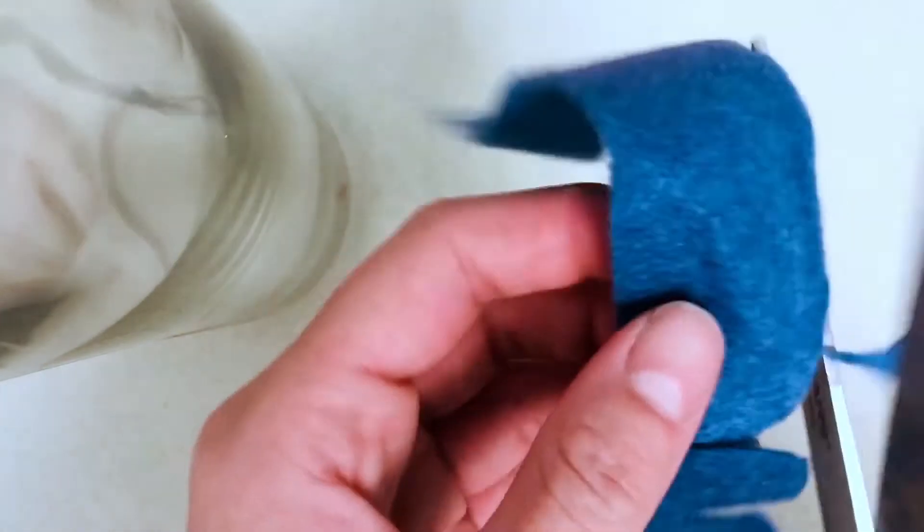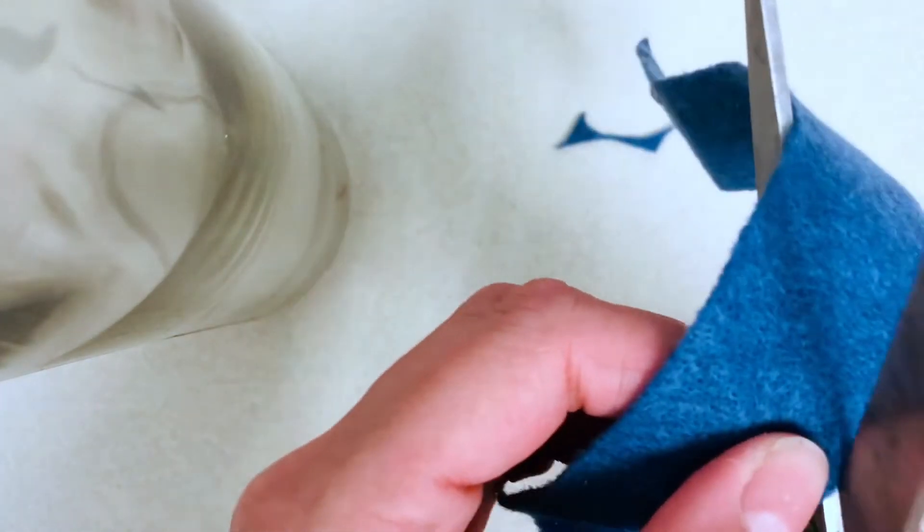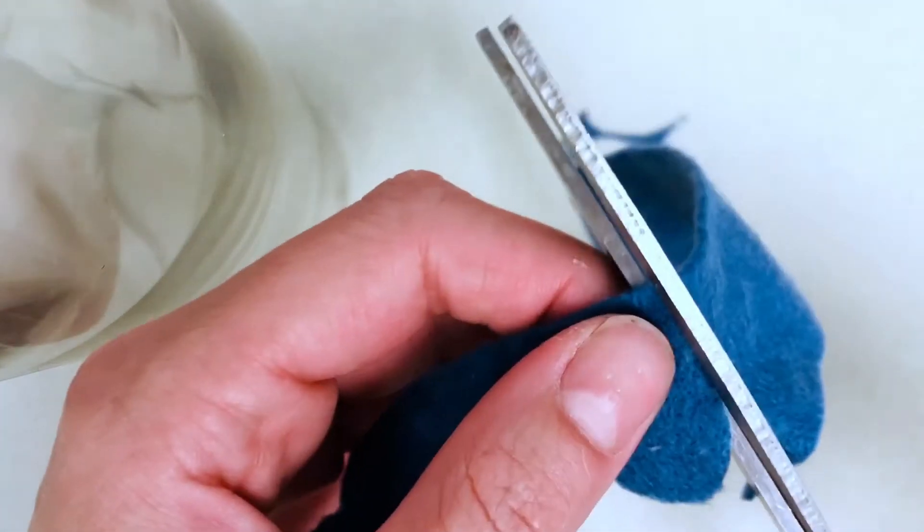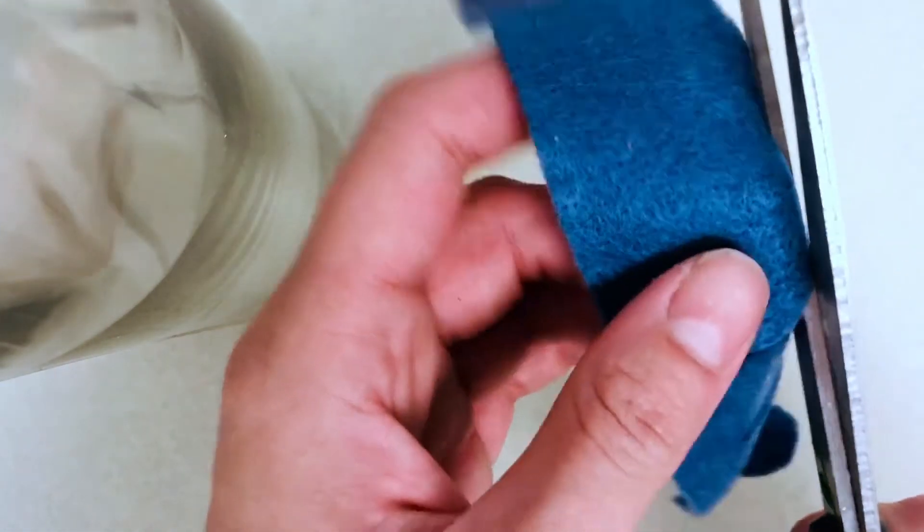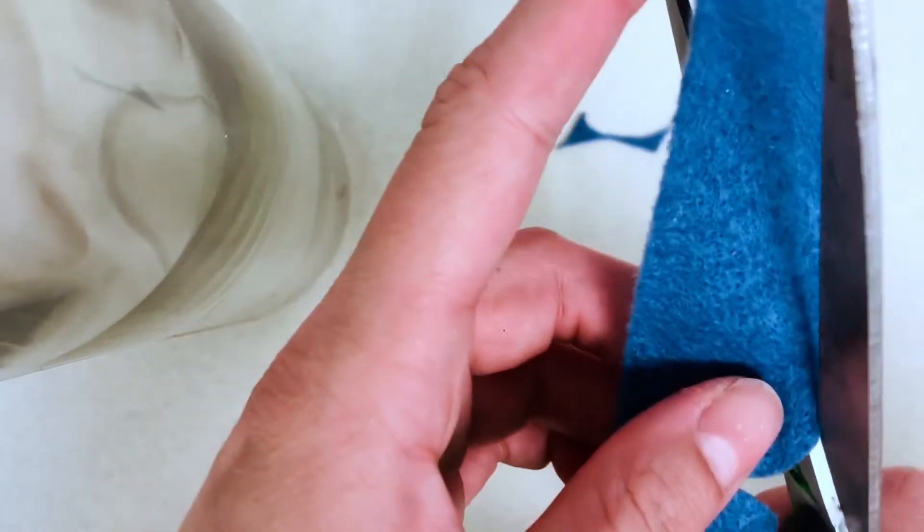You're going to want to keep them about the same size as possible and try to keep them as consistent as possible. Ultimately when the petal shape comes together it's not really going to matter, so it's okay if some are a little bit bigger and some are smaller.